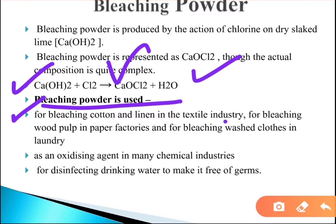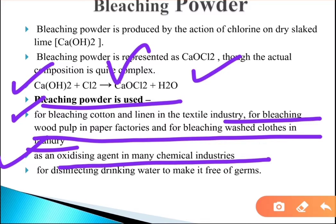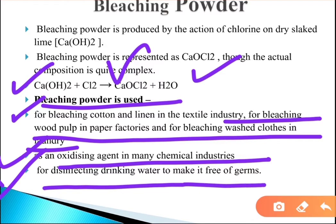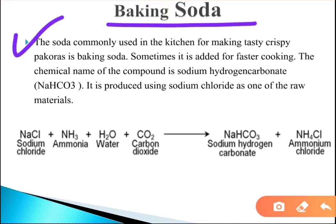Bleaching powder is used for bleaching cotton and linen in the textile industry, for bleaching wood pulp in paper factories, and for bleaching washed clothes in laundries. It is also used as an oxidizing agent in chemical industries and for disinfecting drinking water.